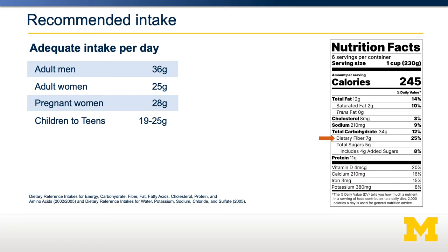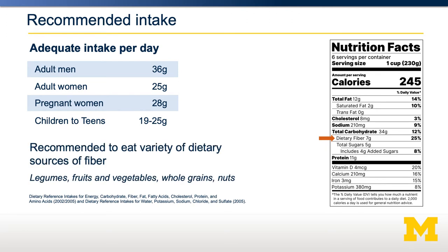If you look at the nutrition facts label on the right, you'll see that fiber is located under total carbohydrates, even though they have very little energy content. Fiber is shown here as dietary fiber and may be further broken down into soluble or insoluble fiber, but that's at the discretion of the food manufacturer. The general recommendation is to eat a large variety of different sources of fiber because we want to get a variety of different soluble and insoluble fibers, since each individual fiber molecule has a different effect.